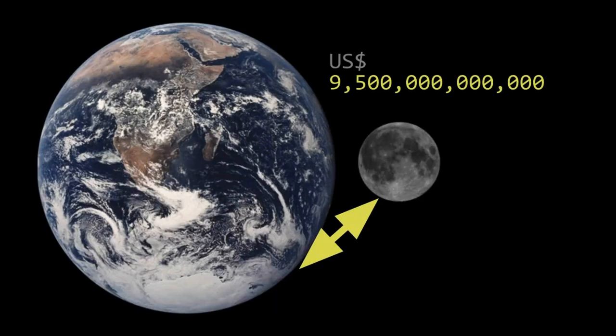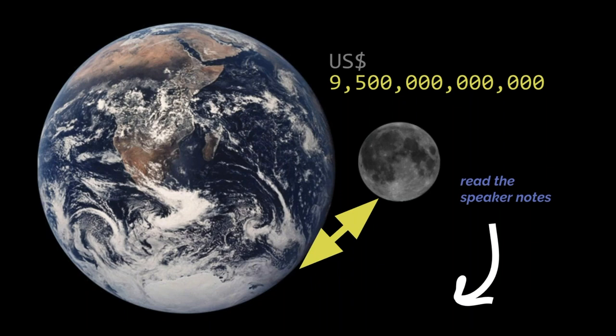Governments around the world spend $9.5 trillion every year on public procurement. This is public money used for everything from boots for armies to pencils for departments to roads, bridges, and hospitals. If you stacked one dollar bills, it would go to the moon and back — that is how much $9.5 trillion is.